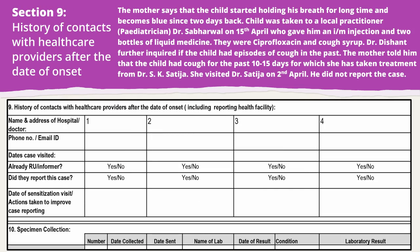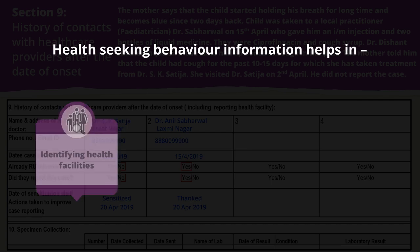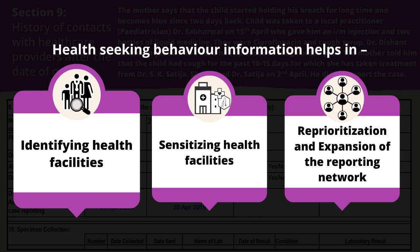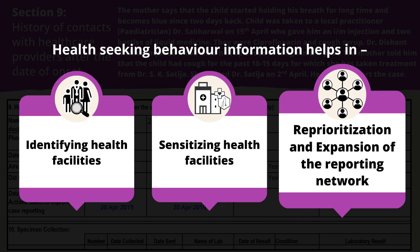Section 9 highlights the health-seeking behaviour of the patient. In this case, a couple of health facilities were visited by the patient on 2nd April and 15th April. All health providers who did not report the case should be sensitised. This information helps in identifying all health facilities a suspected case may have visited, and aids in sensitisation for timely notification as well as reprioritisation and expansion of the reporting network.